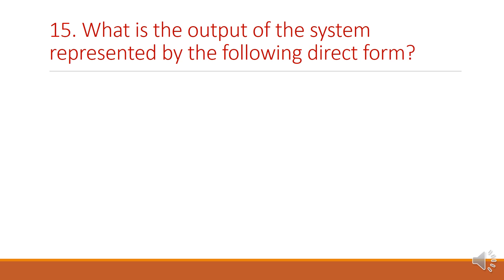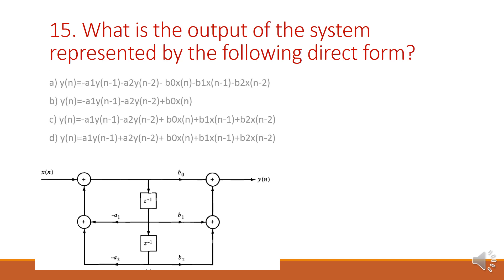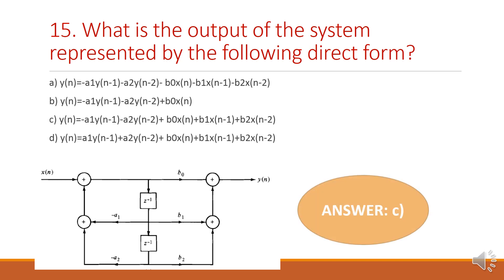Next question: what is the output of the system represented by the following direct form structure? Among the four options, option C is the right answer: Y of n equals minus A1·Y(n−1) minus A2·Y(n−2) plus B0·X(n) plus B1·X(n−1) plus B2·X(n−2).